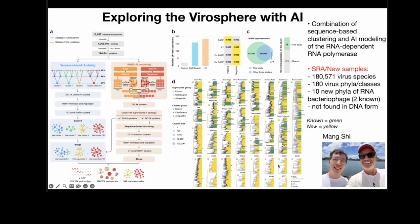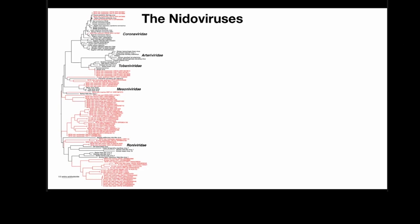I want to focus on one family to bring it home — and that family is the Nidovirales, the Nido viruses. You all know what they are, because they're the ones that made us sit at home for three and a half years — they contain the coronaviruses. The Nidovirales contain a number of known families, shown in black, including the coronaviruses. SARS-CoV-2 is that particular lineage among that diversity. The ones in black and red are ones we discovered in this approach.